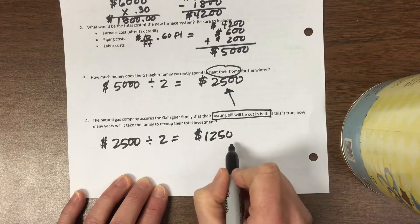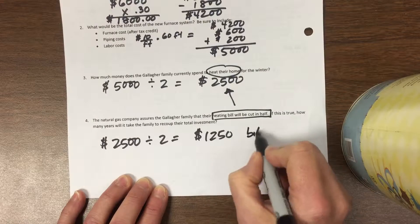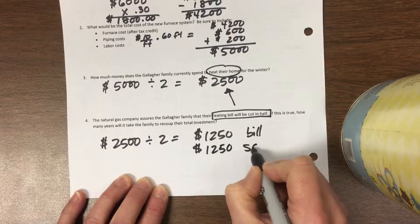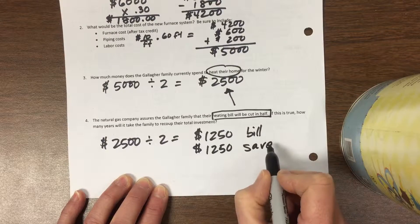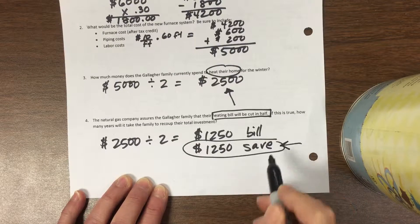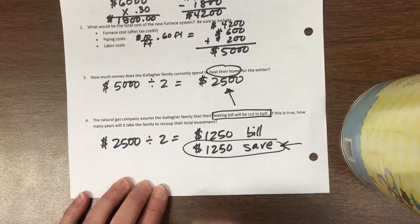That would be their new bill, which means the other half would be a savings. That's how you have to look at it. They would save this much every year if they bought this new system. So how long is it going to take them to get their $5,000 investment back?